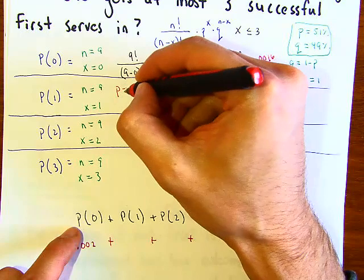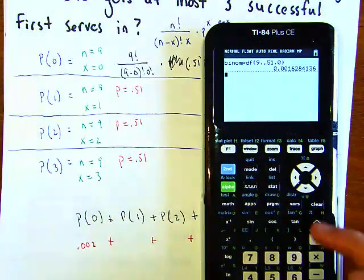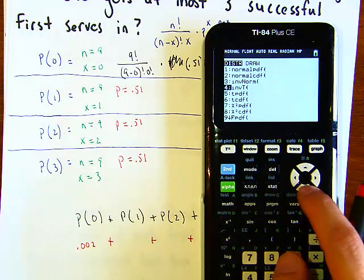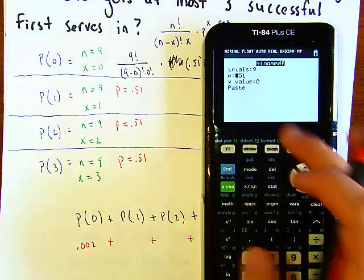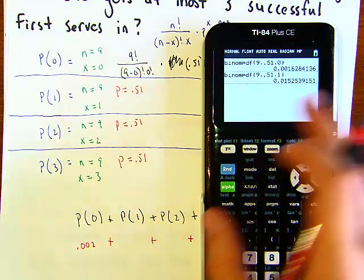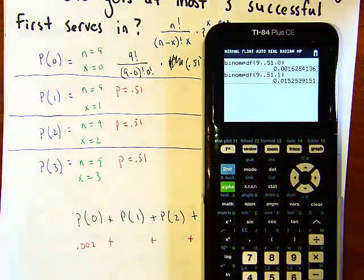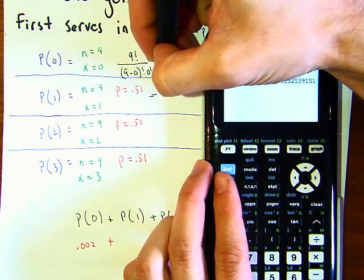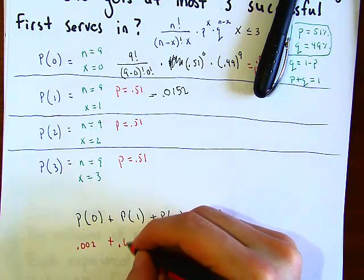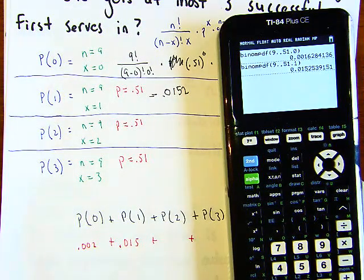The p value is always 0.51 and n is always 9 — the only thing changing is x. Going back to 2nd → VARS → binomial PDF with x equal to 1, we get 0.0152, which rounds to 0.015. Using the calculator is much faster than doing every calculation manually.